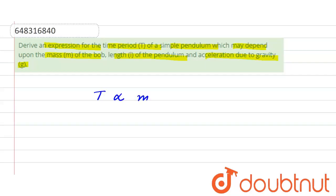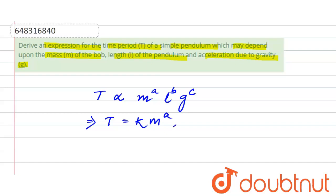Since the time period may depend upon the mass, length, and acceleration, we can write T is directly proportional to m to the power a, where m means mass, then l (length of the pendulum) to the power b, and the acceleration due to gravity g to the power c. So we can write T = k · m^a · l^b · g^c.